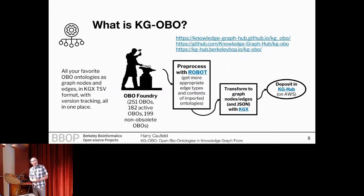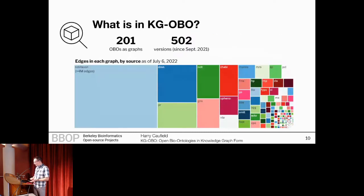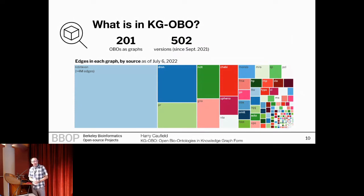For KG-OBO in particular, you can find it at kghub.berkeleybop.io/KGObo. That will give you a whole list of all the most recent versions of these OBOs as knowledge graphs. You get a variety of artifacts that go with those as well, including JSON and the most recent commit of KG-OBO, so you can actually track the full provenance of creating these things. We have more than 200 OBOs as graph structures ready to plug into your favorite knowledge graph, and more than 500 versions since we started collecting them in September of last year. By edge, most of them are from NCBI taxon — not surprisingly, that's an awfully big one — but we also have things like drug ontology, protein ontology, and NCIT.